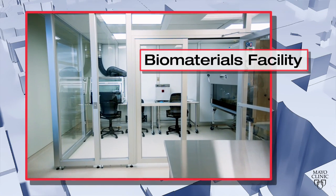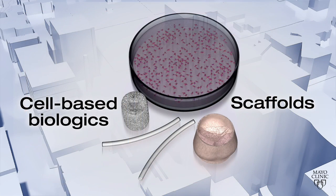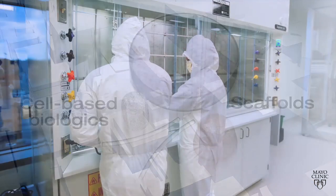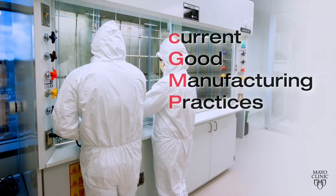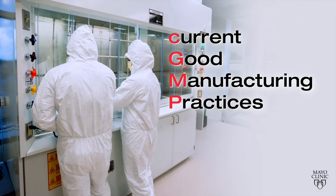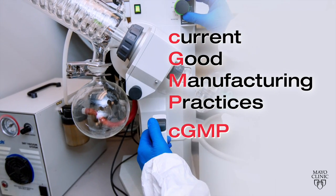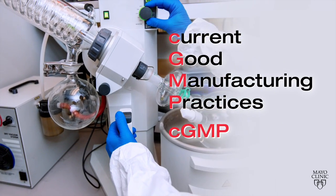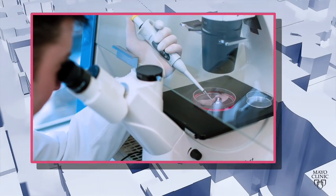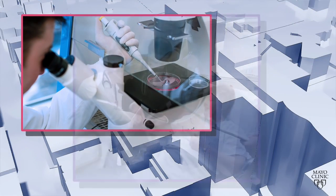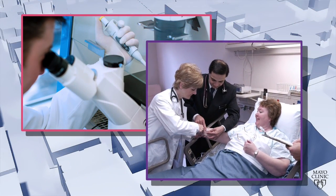The Biomaterials Facility will manufacture scaffolds that can be combined with cells from the Human Cell Laboratory in a clean room under the rigorous guidelines of current good manufacturing practices, or CGMP. Following CGMP accelerates the rate at which biomaterials and regenerative technologies are translated from bench to bedside.